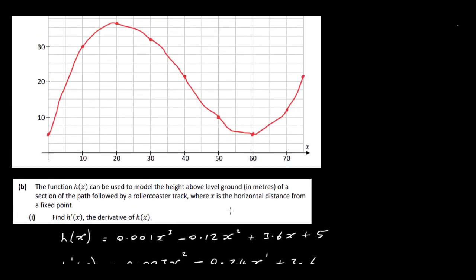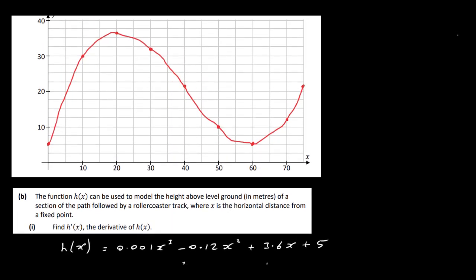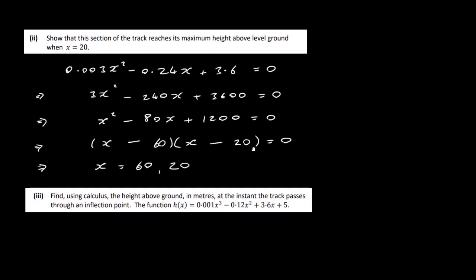Now again, if we look back at our graph, you can see here that we have a maximum here at 20. I know I've gone a little bit above it here, but if I did this right here, that should just curve around here. So maximum at 20, and you can see there's a minimum here at 60. But it says here, show that this section of the track reaches its maximum height above level ground when x is equal to 20. So really what you'd be expected to do here is show that this is going to give us our maximum.